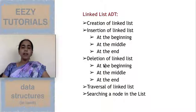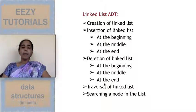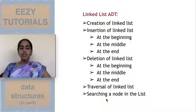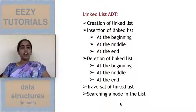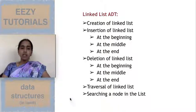Deletion means removing an element — you can do deletion at the beginning, middle, or end. Traversal is simply displaying the linked list: what elements are present. That is called traversal of the linked list. Searching means finding a node in the linked list — for example, at which position 5 is present, or what element is present at the fourth position. These are the basic ADTs of a linked list.